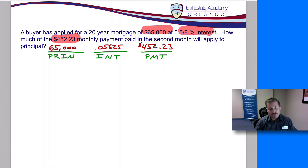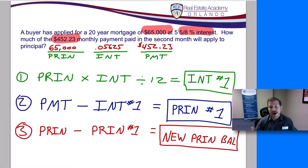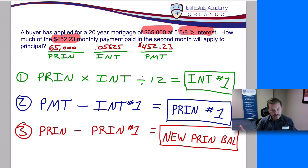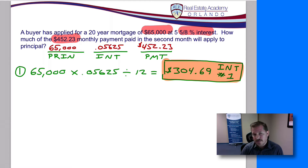Let's look at our three steps for reference. Step one: take our principal balance, multiply it by the interest rate, then divide by 12 — that tells us how much of payment number one is applied to just the interest. Step two: subtract that interest portion from the full monthly payment to get the amount applied to principal. Step three: subtract what we applied to principal from the starting balance to get our new principal balance. So $65,000 times 0.05625 divided by 12 gives us an interest payment of $304.69.